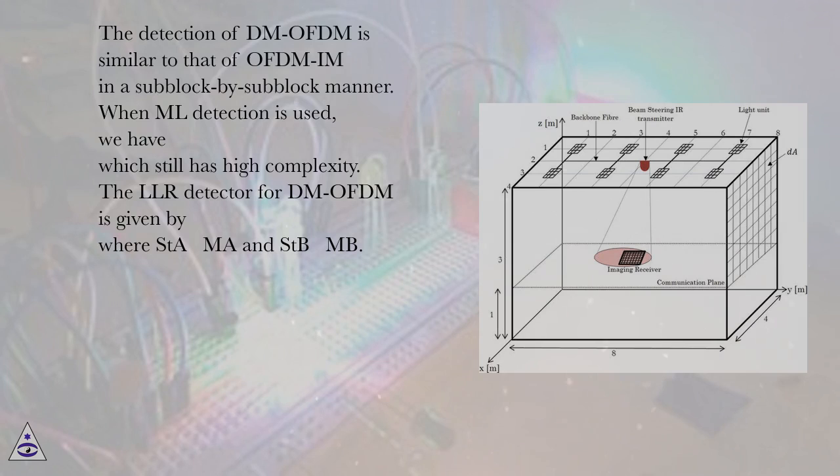When ML detection is used, we have equation which still has high complexity. The LLR detector for DM-OFDM is given by equation where SA has MA and SB has MB.